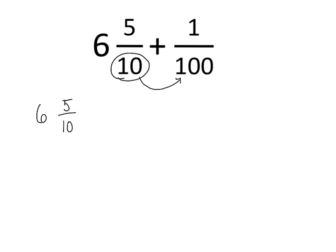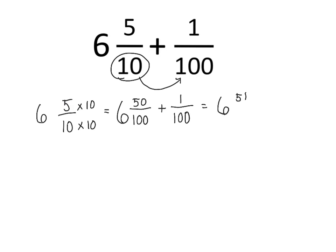And how do we get to a hundredth? Well, we multiply the top and the bottom by 10. And we're going to get — now the 6 wholes, leave it alone — we get 50 hundredths. So now we can take 6 and 50 hundredths and add it to 1 hundredth. And we get 6 and 51 hundredths.